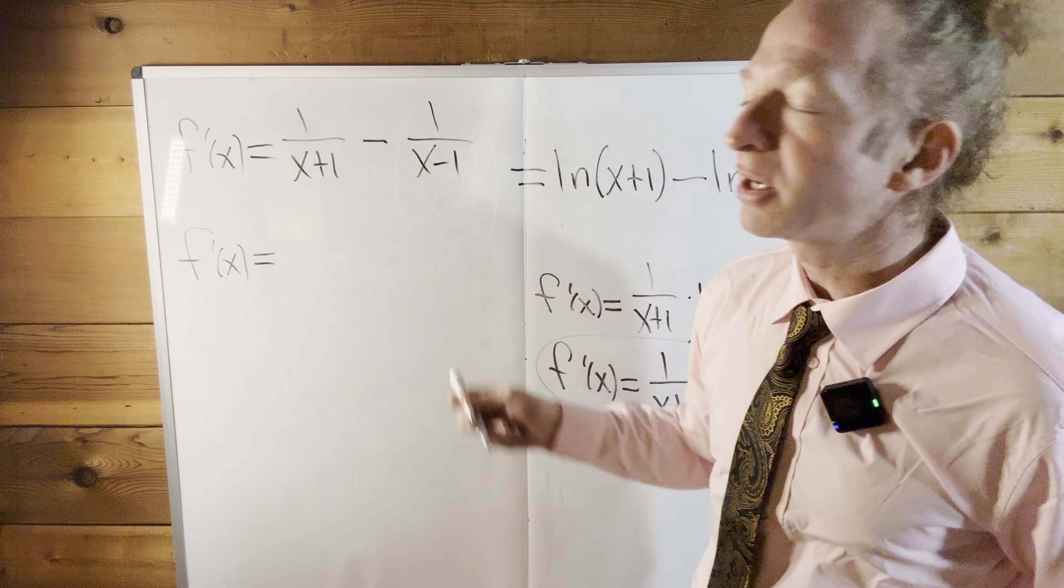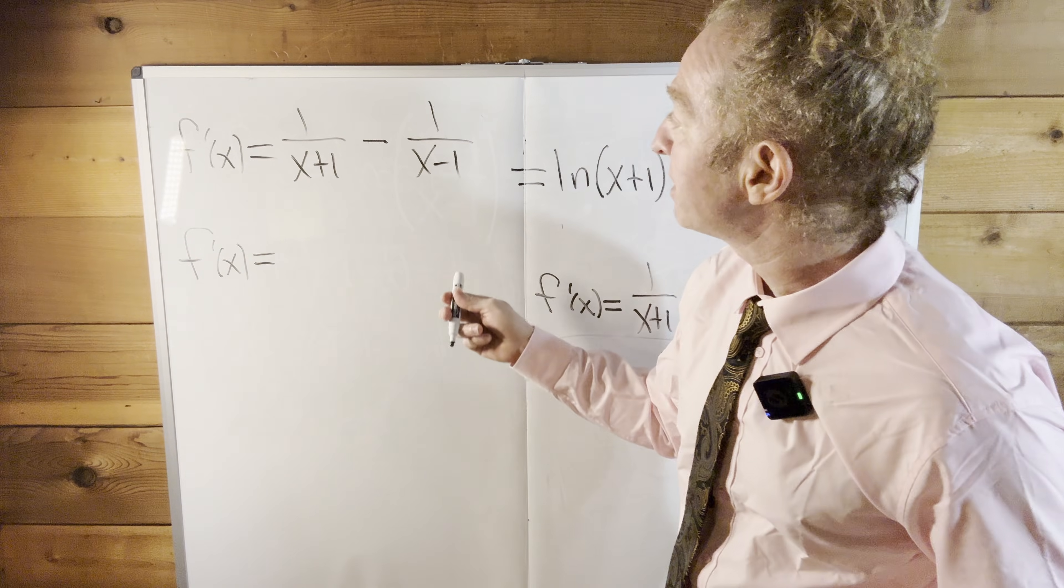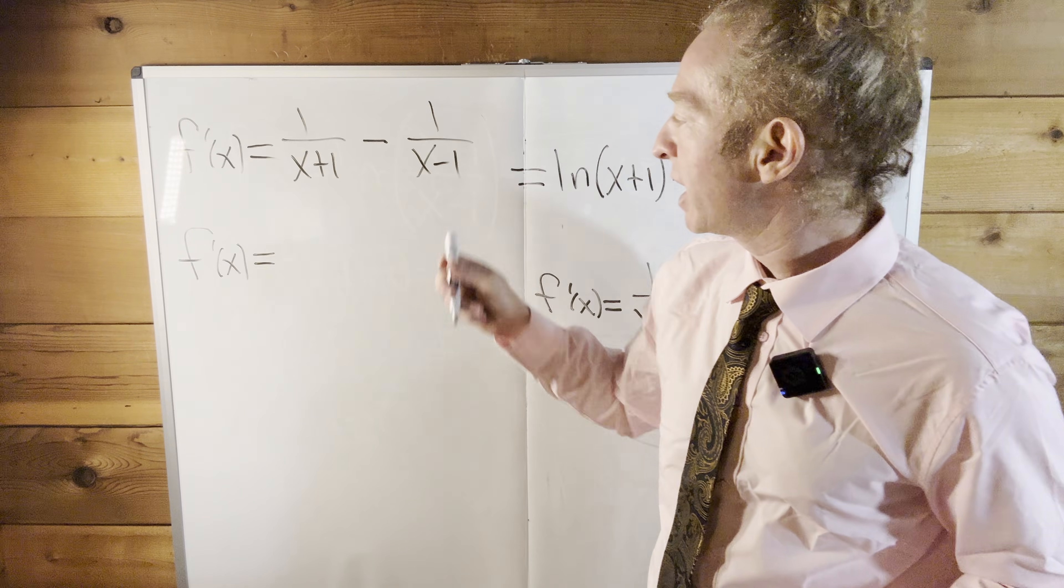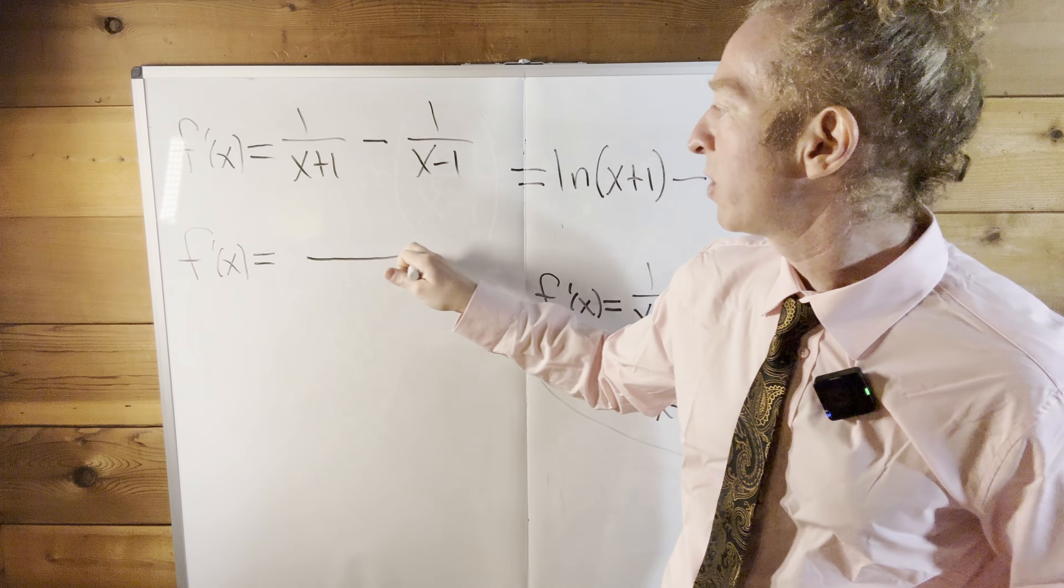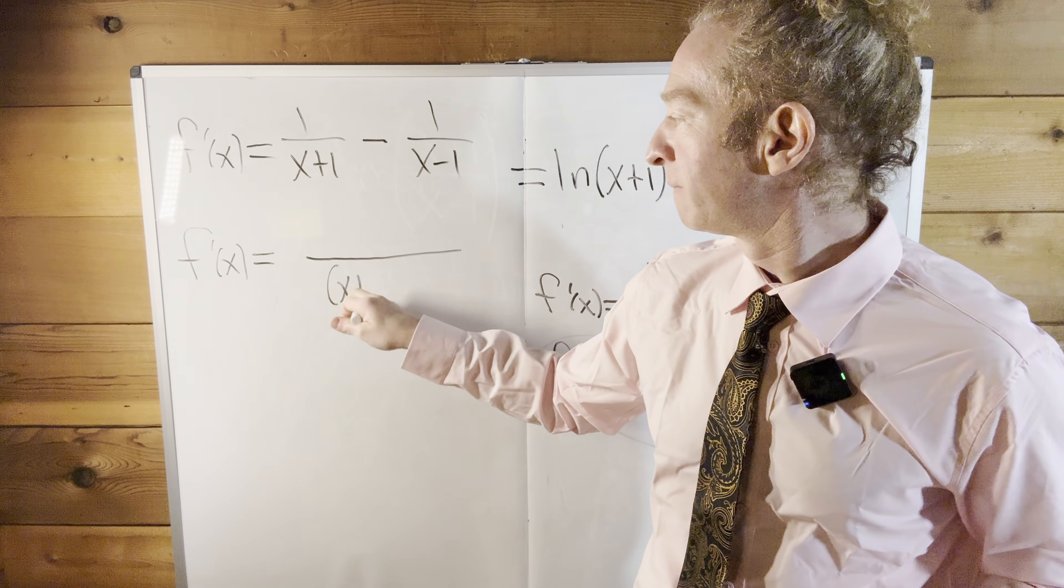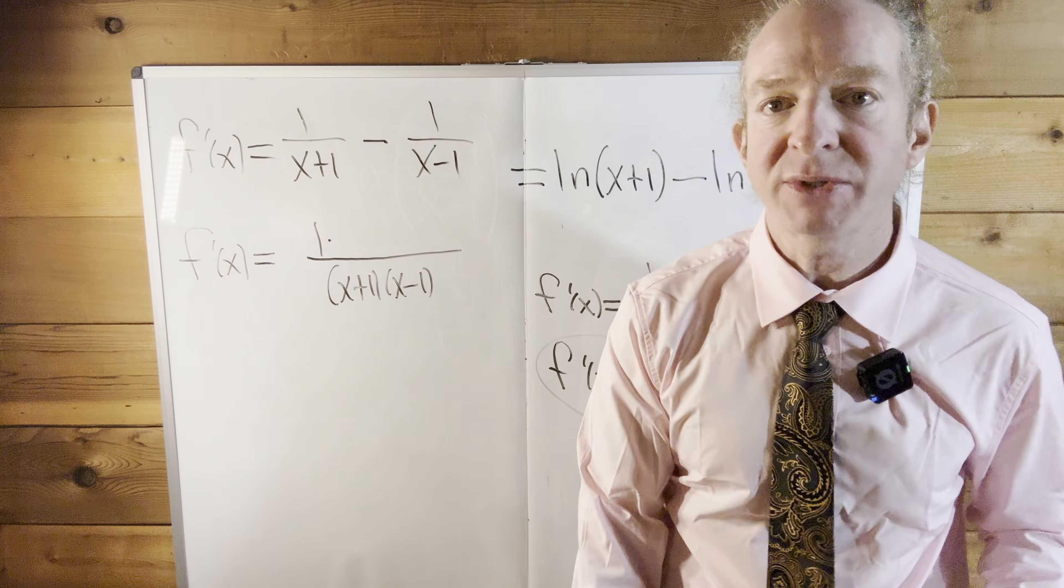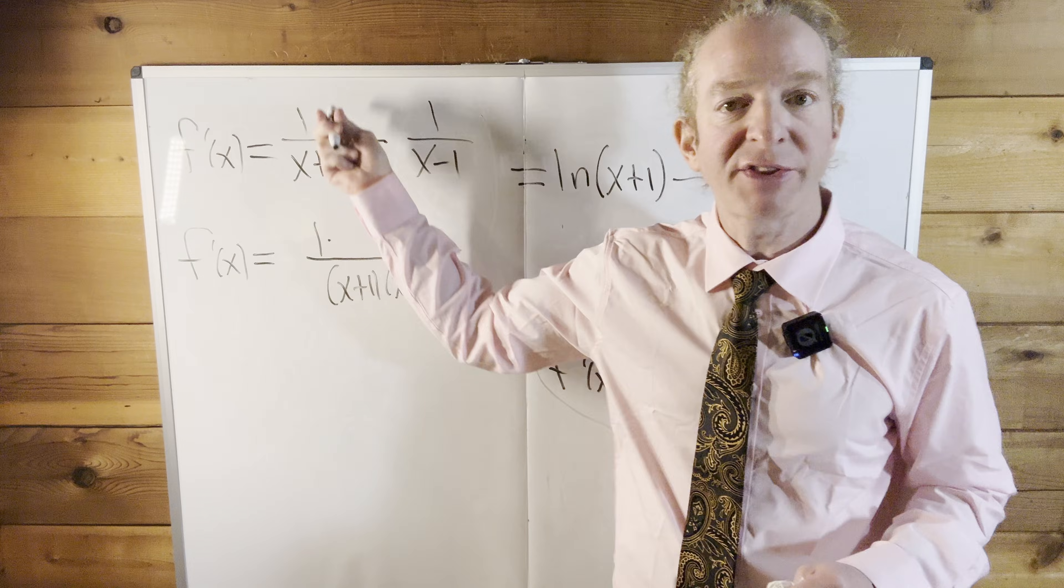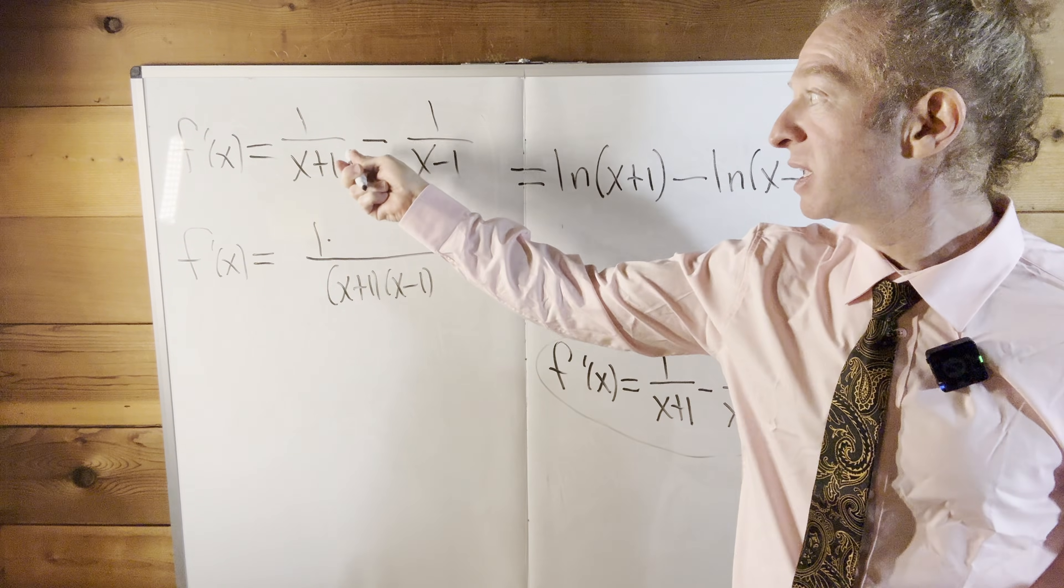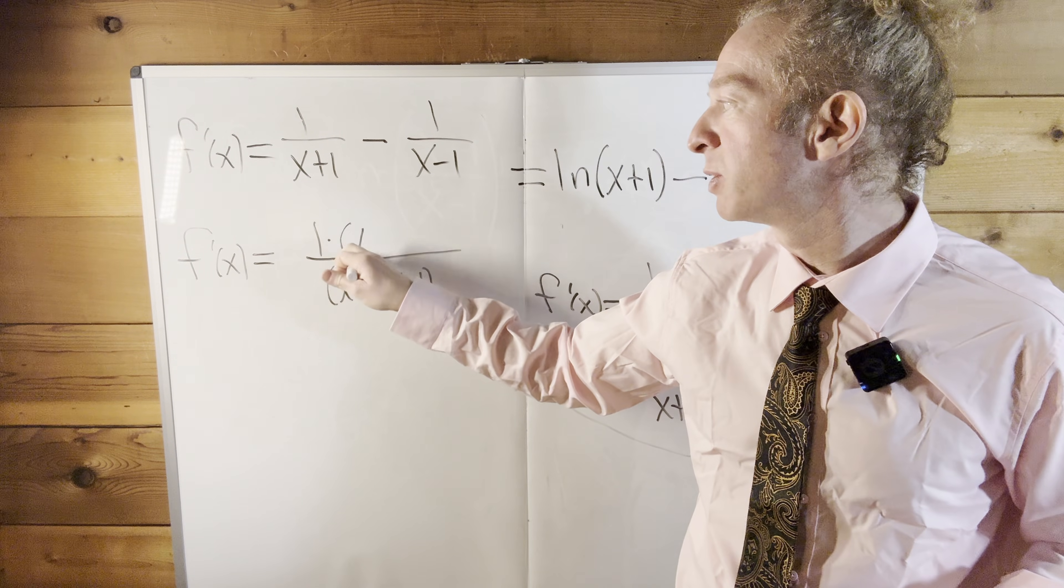So watch this. What we can do is we can find a common denominator. The common denominator is going to be x plus 1 times x minus 1. I'm going to show you the fastest way to do it. And it's going to be 1 times, well, what's missing here to get the common denominator? You're missing an x minus 1.